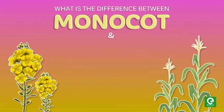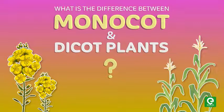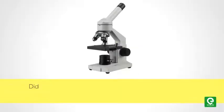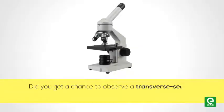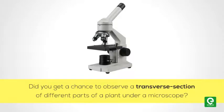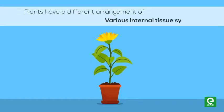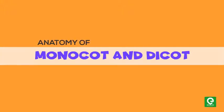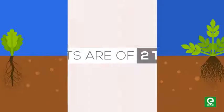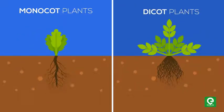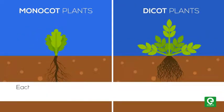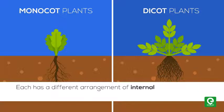What is the difference between monocot and dicot plants? In your biology lab, did you get a chance to observe a transverse section of different parts of a plant under a microscope? Plants have different arrangements of various internal tissue systems. In this video, we will discuss the anatomy of monocot and dicot plants. Plants are of two types: monocot plants and dicot plants, each with a different arrangement of internal tissue organization in their stems and roots.